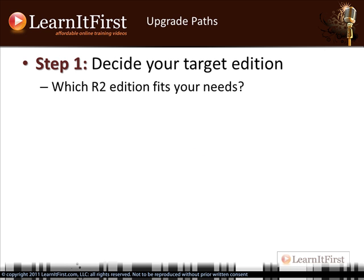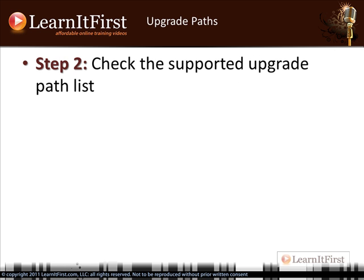There's a decent white paper called 'Why Upgrade to R2' from the Microsoft Marketing folks — it's only about 13 or 14 pages, so you may want to check it out. The first thing you have to do is figure out which edition of R2 you'll go with: Standard, Enterprise, Parallel Data Center, and so on. Once you have that figured out, you start looking at the supported upgrade paths.